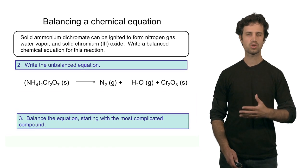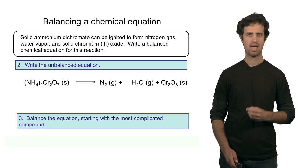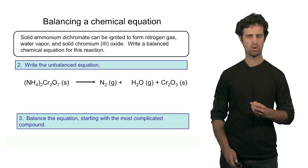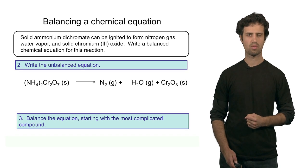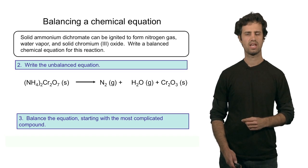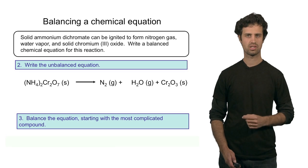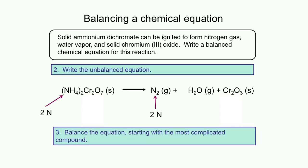The last step is to actually balance the equation. And we would like to start with the most complicated molecule or the most exotic element. Let's, in this case, start with ammonium dichromate, with the first element in ammonium dichromate, which is the nitrogen atom. I count a total of two on the left. I also count two on the right, which means that nitrogen is already balanced.